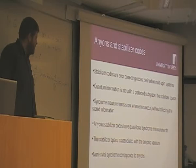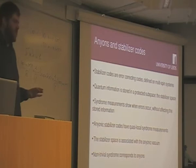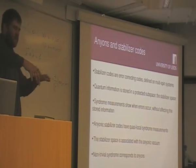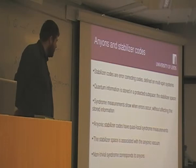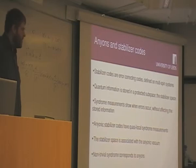You define syndrome measurements which don't affect the information you have stored within the stabilizer space, but do tell you when the state of the system leaves the space, so you know that an error has occurred, and you can tell what type of error has occurred, and you can undo it before it gets too bad. But the stabilizer codes associated with anyons are defined on two-dimensional spin lattices, and the stabilizers are localized so that you actually have clumps of spins. The stabilizer space is associated with the anyonic vacuum and non-trivial syndrome outcomes that work on the anyons.